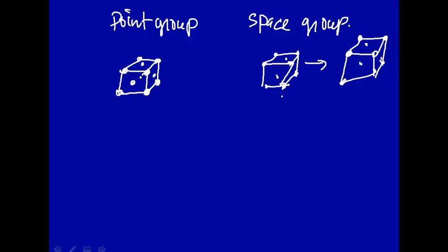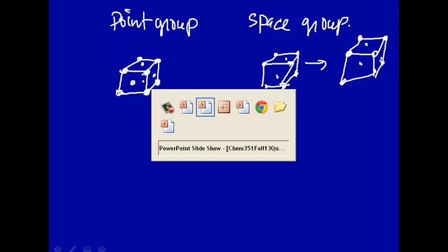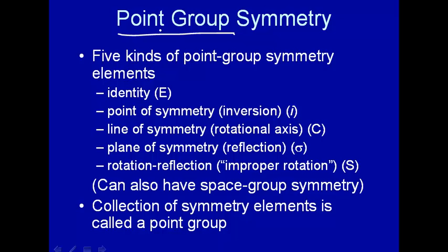Similarly here, point group, you have a point through which all symmetry operations go through, with a net result that the actual molecule that you're doing the point group operations on don't change. So that's what it means by point group.